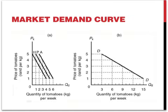Deriving the market demand is simply a summation of the individual quantities demanded at each of the prices. This is also true if you are presented with individual demand curves and have to derive the market demand curve. For example, at a price of 2, the individual quantities demanded are 3, plus 4, plus 5, which adds up to a total of 12. A horizontal summation of the individual demand curves yields the market demand curve.